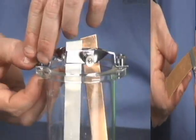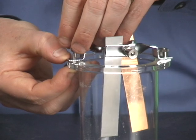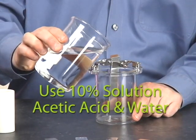Attach zinc and copper electrodes to the clamps on the cup, then fill the cup with an electrolyte such as acetic acid.